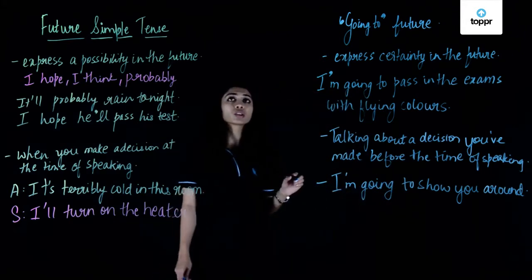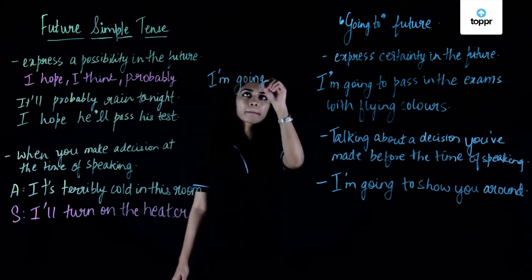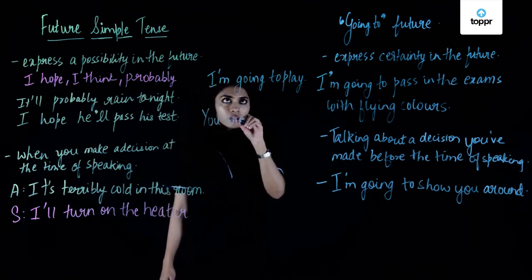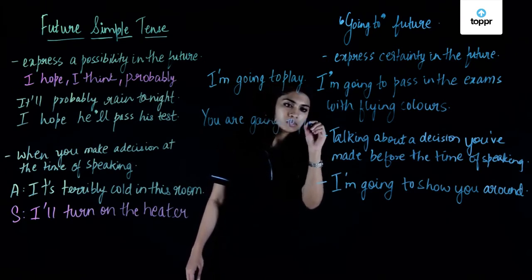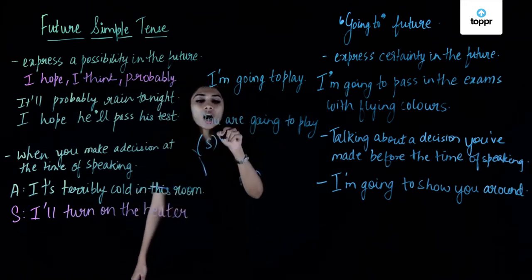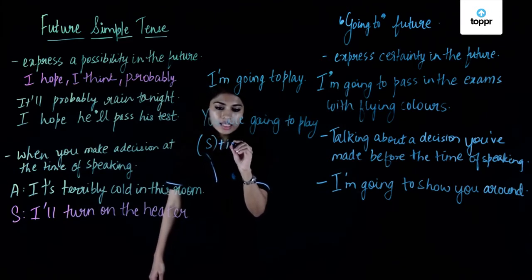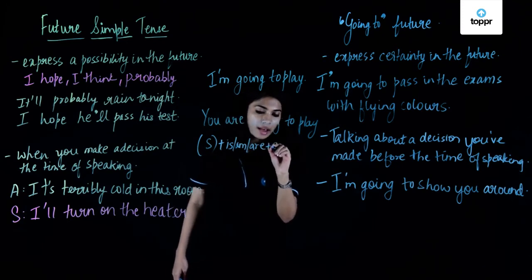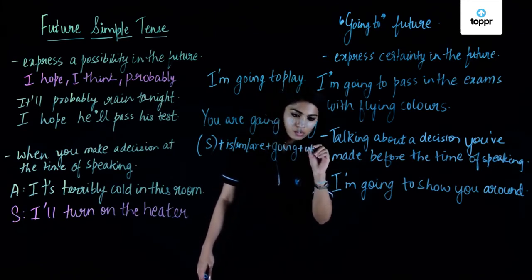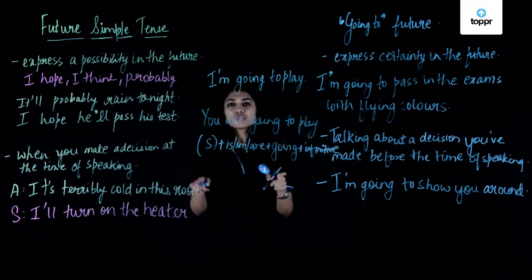Let's look at the formulation of the going to future. We have 'I am going to play' and 'you are going to play.' So the formulation is: subject, plus the to-be verb conjugated — 'am,' 'is,' or 'are' — plus 'going,' plus the infinitive, such as 'to play.' That's the formation of the going to future.